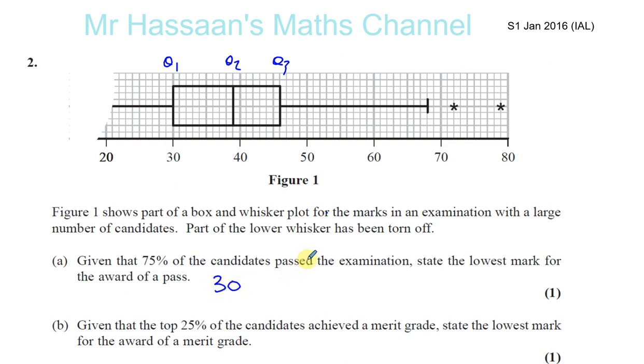Then it says, given that the top 25% of the students achieves a merit grade, state the lowest mark for the award of a merit grade. So anyone from the top 25% of the students would be all the students in this region here, the ones that got more than the upper quartile and above.